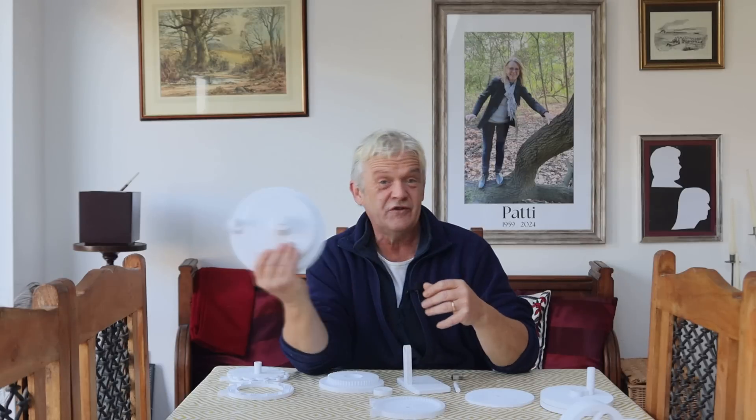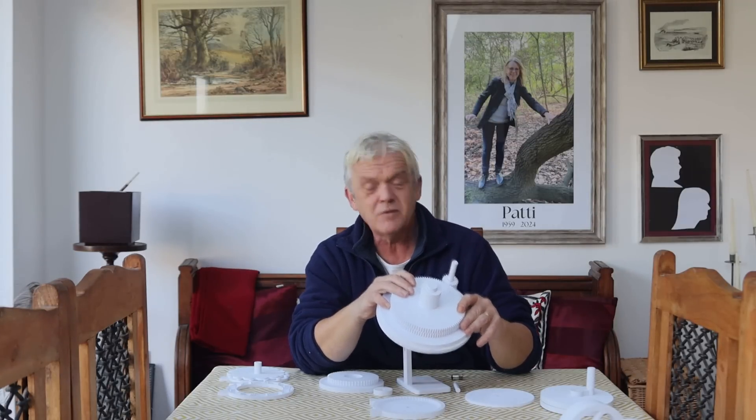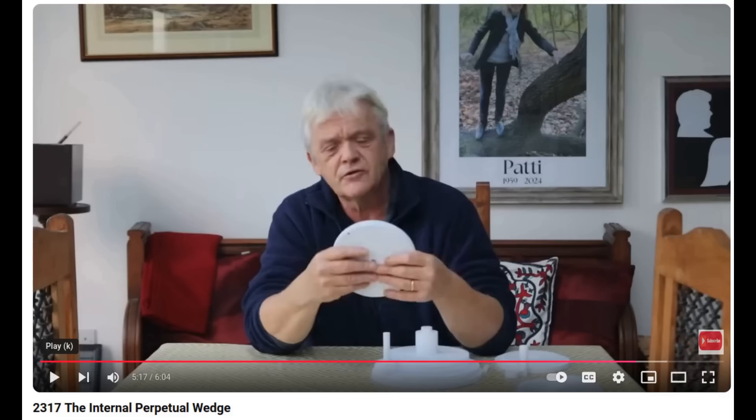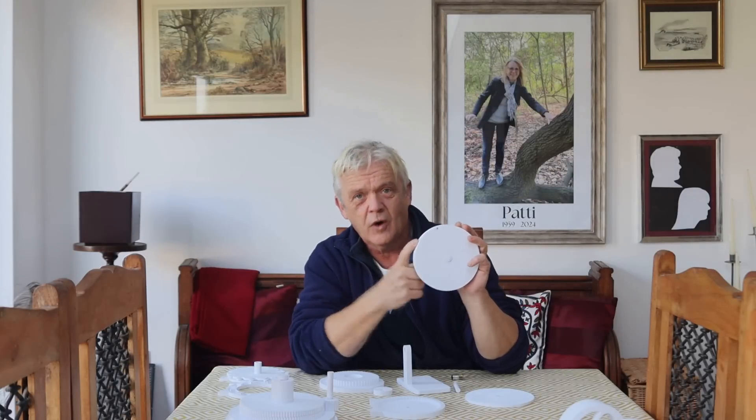So in video 2317, we took this perpetual wedge with a gear ratio of 100 to 1, because it was a demonstration, and we turned it into this, which is exactly the same thing. Only all of the gears are inside, and the gear ratio of this is 60 to 1.